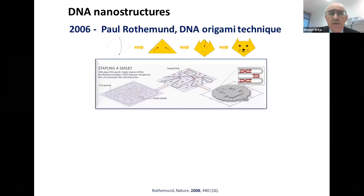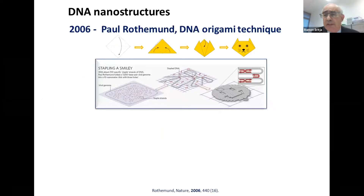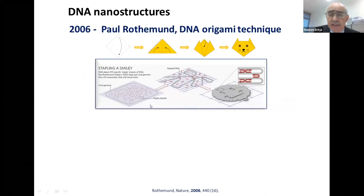I would also like to introduce Paul Rothemund and the DNA origami technique, which is one of these DNA nanostructures. It uses a single-stranded phage DNA that has 7,000 bases, called the M13 DNA.